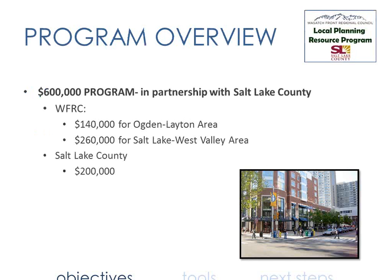This is a $600,000 per year program, broken up as you see. Wasatch Front's resources come from a pot of money called STP — Surface Transportation Projects Program. The breakdown: $140,000 to the Ogden-Layton metro area and $260,000 for Salt Lake, proportional to population. Salt Lake County is matching our funds just for Salt Lake County, so there's $460,000 available for Salt Lake County and $140,000 for Ogden-Layton.